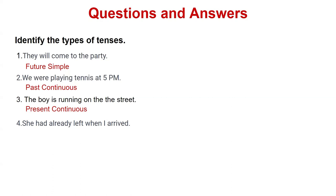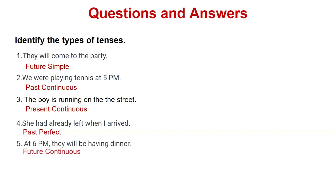'The boy is running on the street' — present continuous. Next: 'She had already left when I arrived.' Focus on the first clause — 'she had already left' — this is past perfect. 'At 6 pm they will be having dinner' — what tense is this? Future continuous.